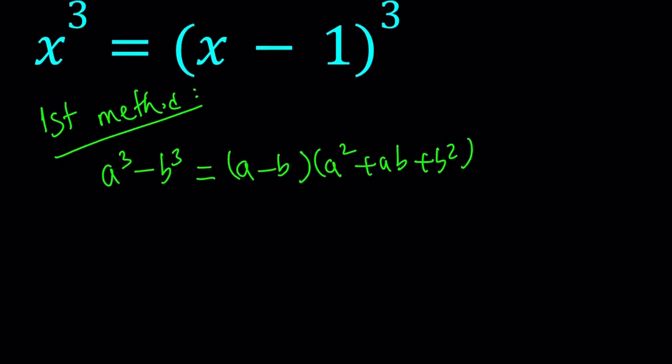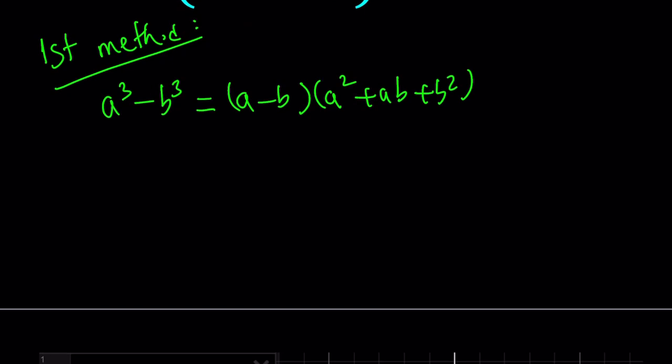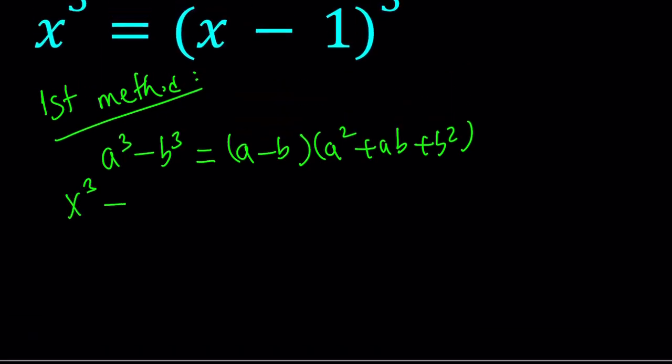So if we use that formula, we're going to go ahead and put it here: x cubed minus x minus 1 cubed. Then we can write it as x minus x minus 1 and then multiply that by x squared plus x times x minus 1 plus x minus 1 squared.